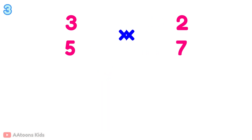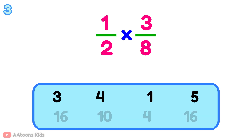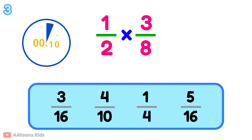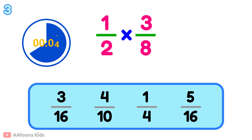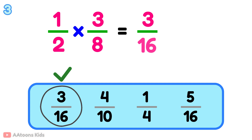What is 1 over 2 multiplied by 3 over 8? 3 over 6.